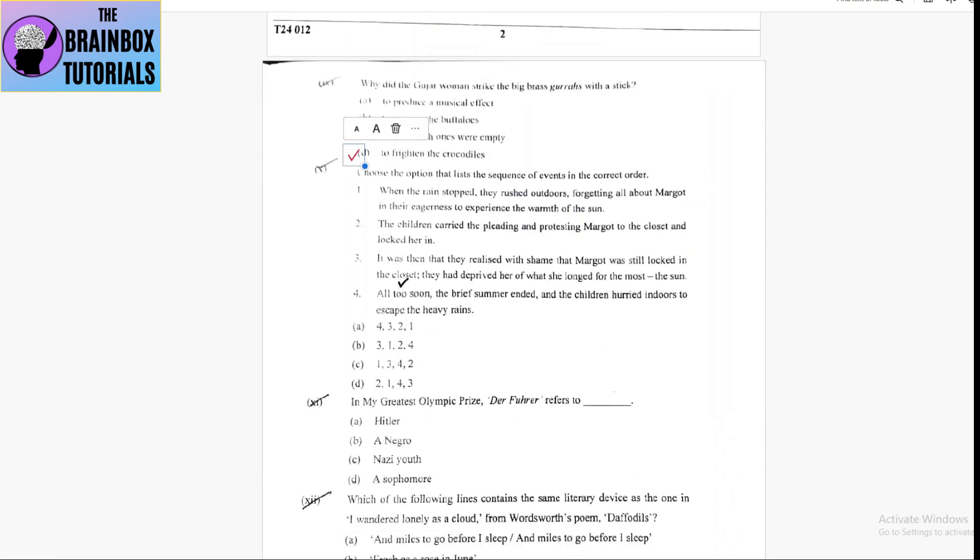Next one, number 10, choose the option that lists the sequence of events in the correct order. Number 1, when the rain stopped, they rushed outdoors, forgetting all about Margot in their eagerness to experience the warmth of the sun.